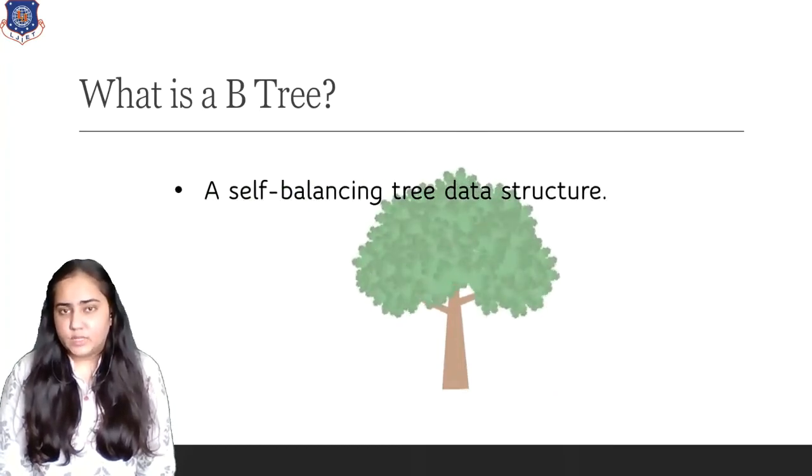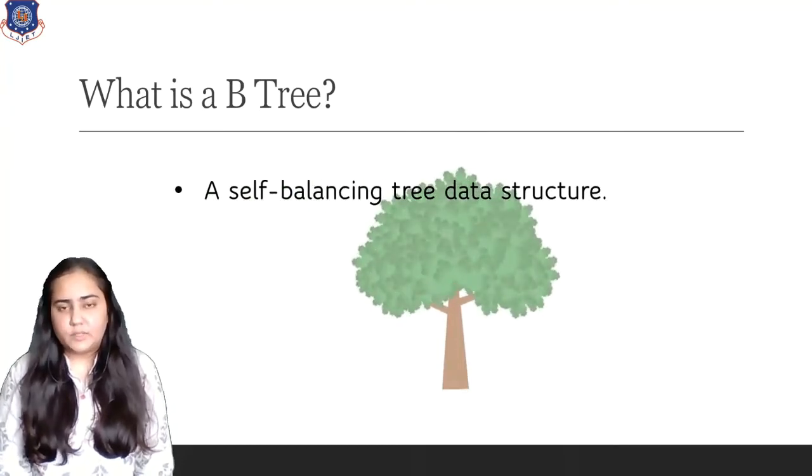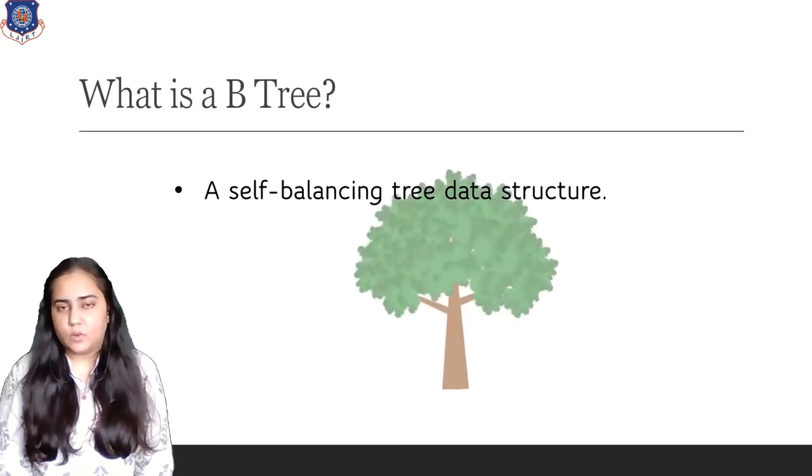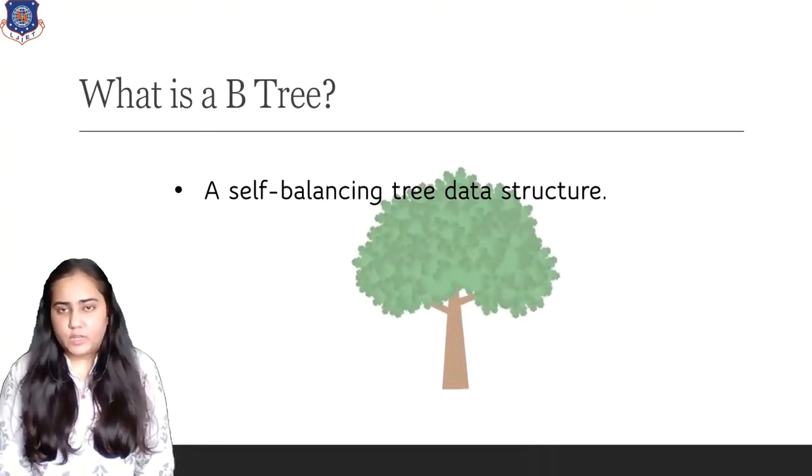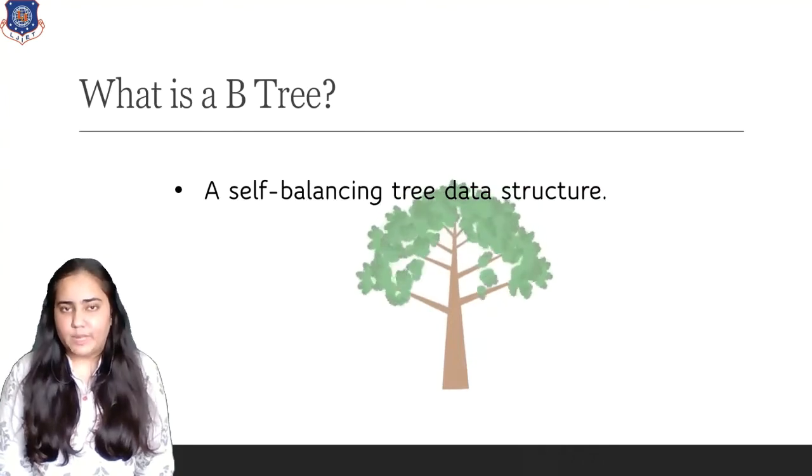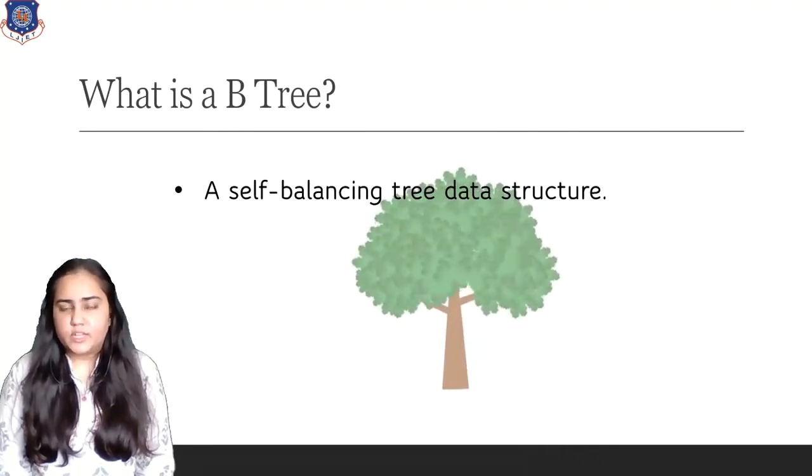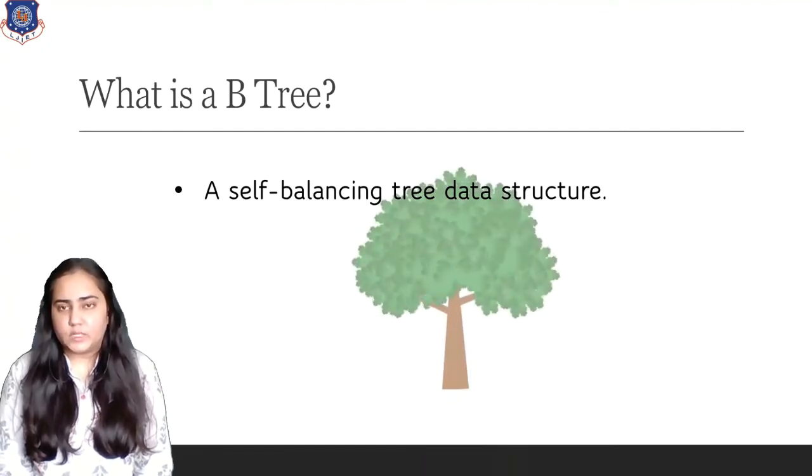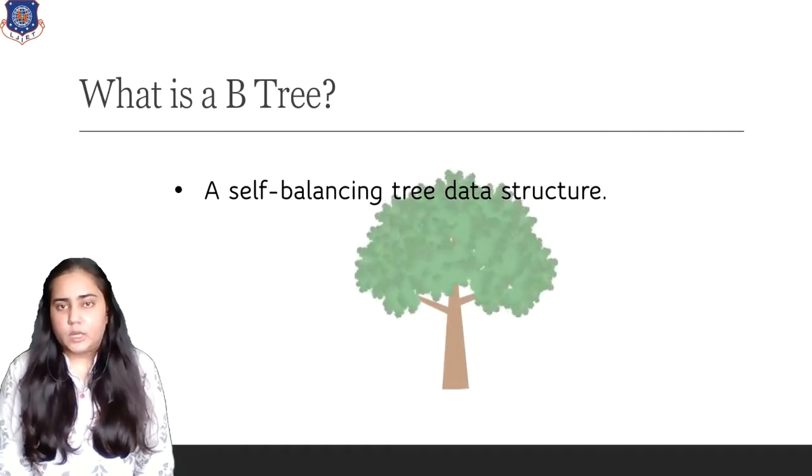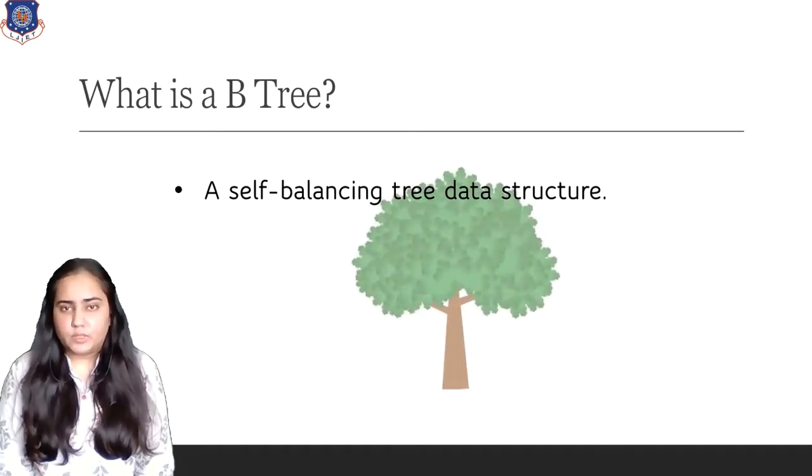It's a self-balancing tree data structure. Self-balancing means at all times the left and right hand side of the trees are nearly balanced. So it won't happen that the tree is growing on one side and on the other side it is smaller. It will always be balanced, nearly balanced on both sides.